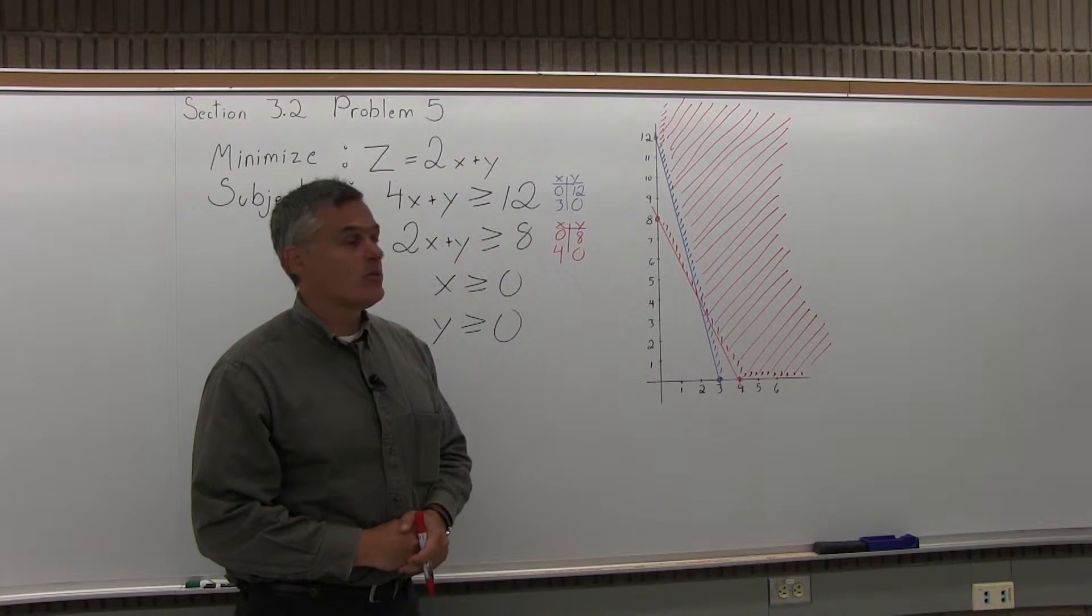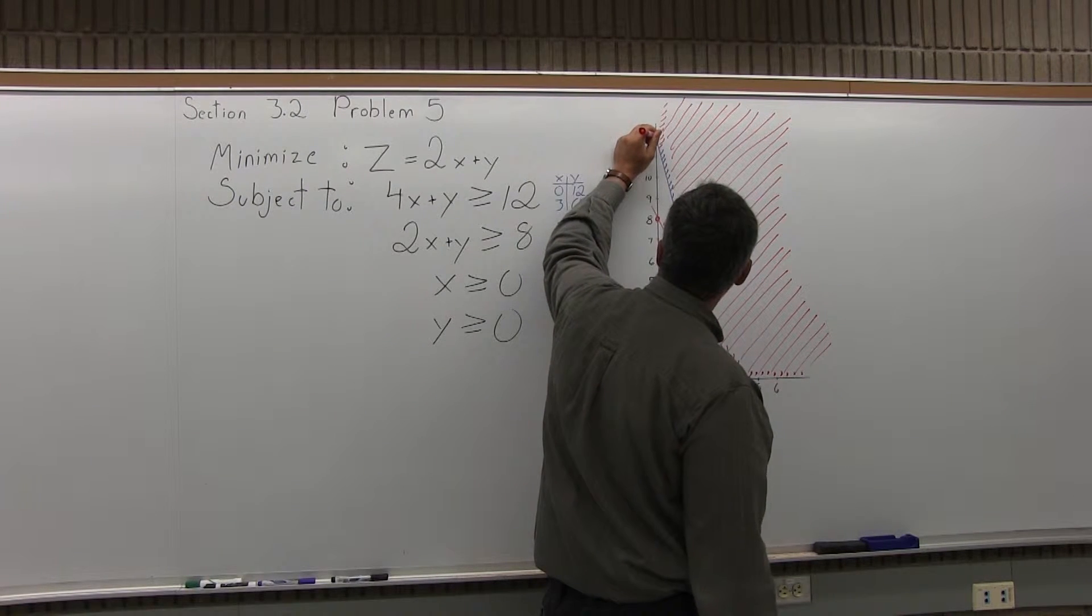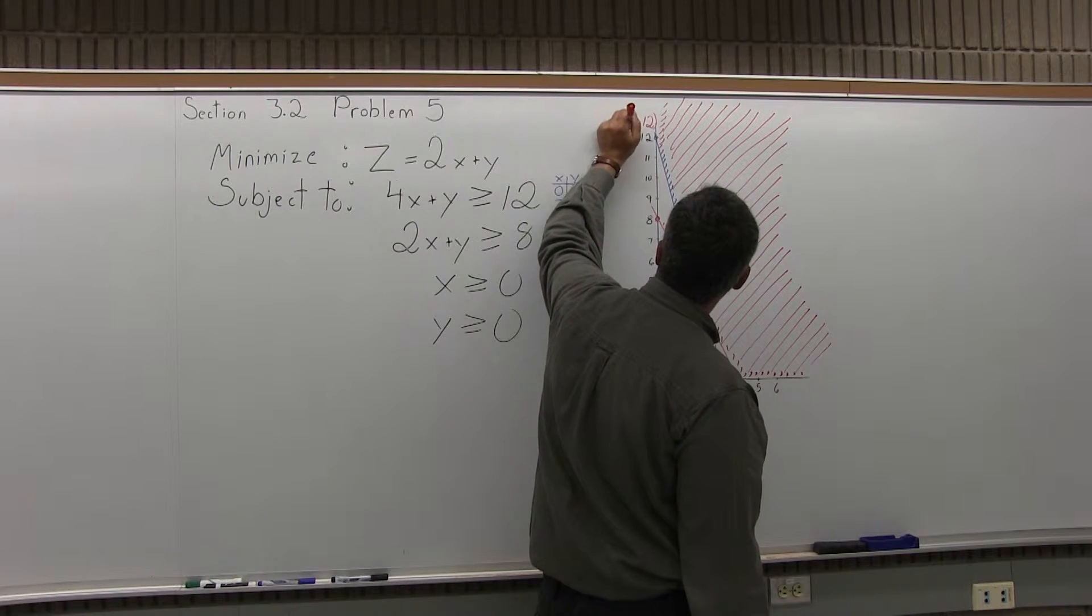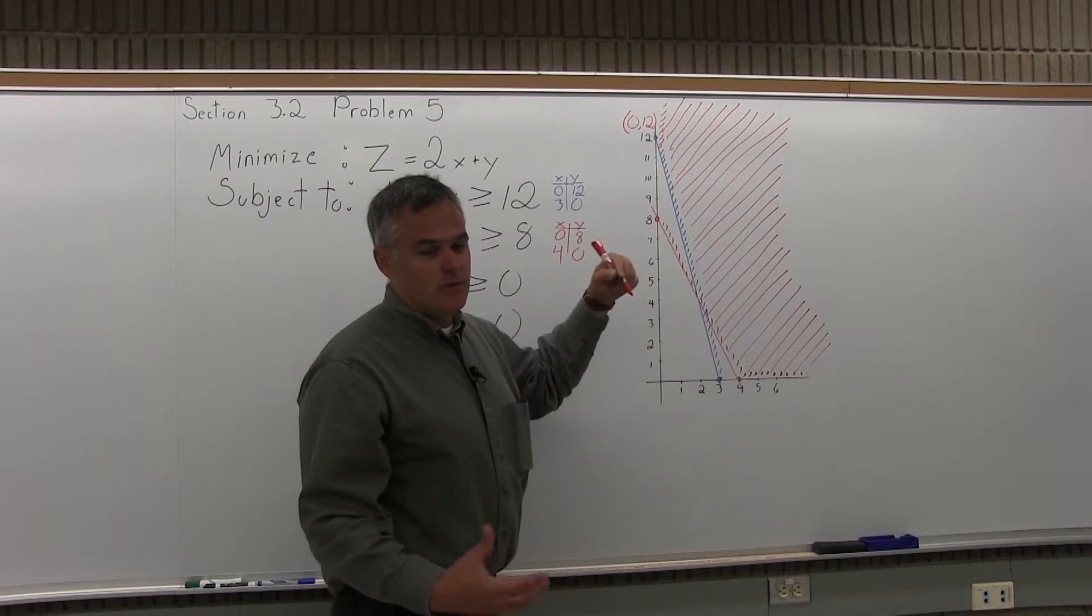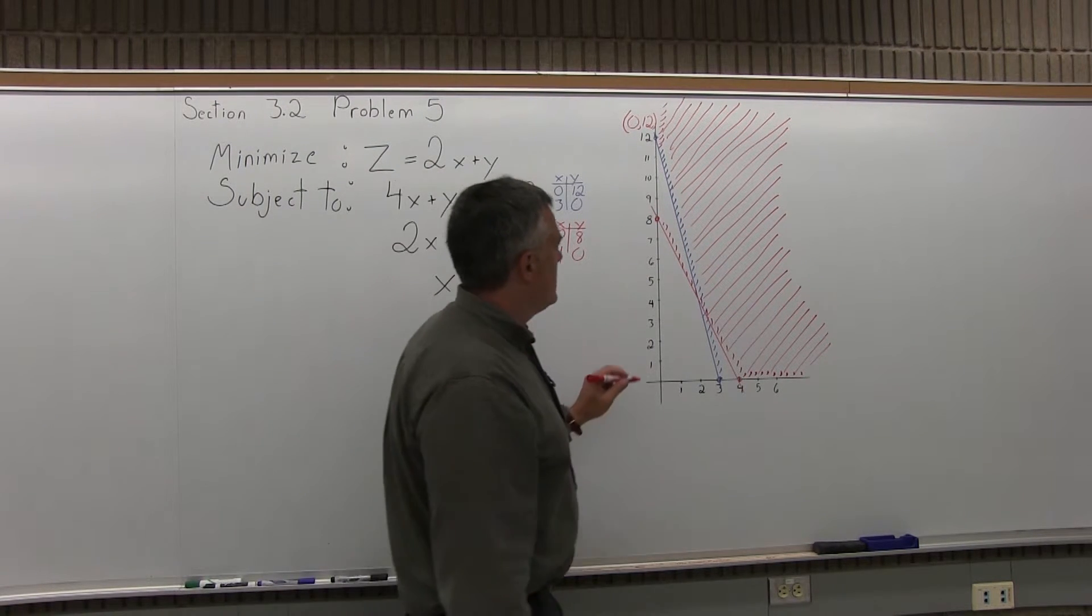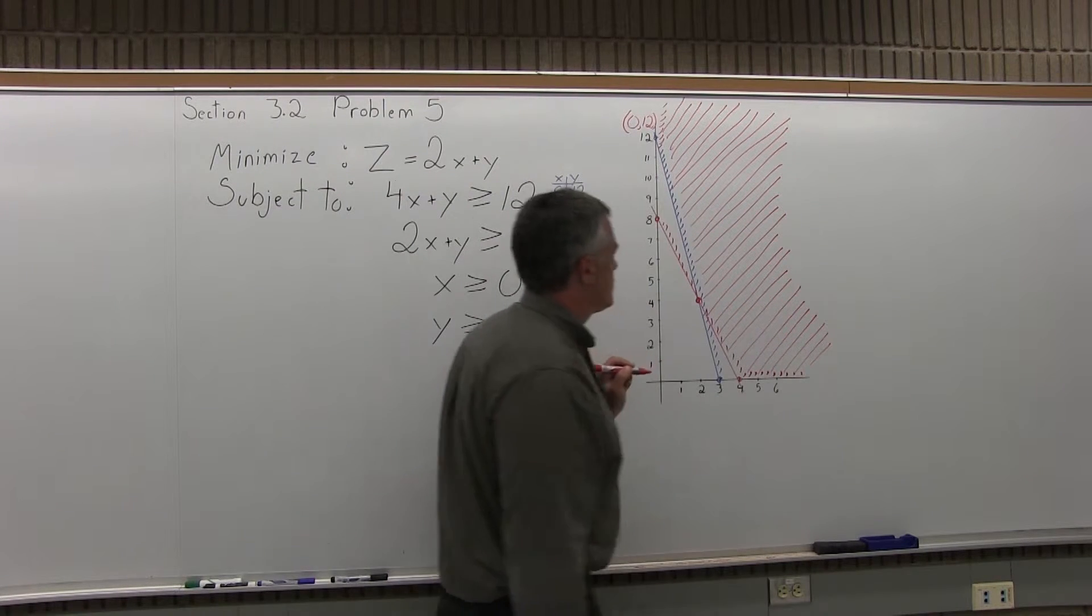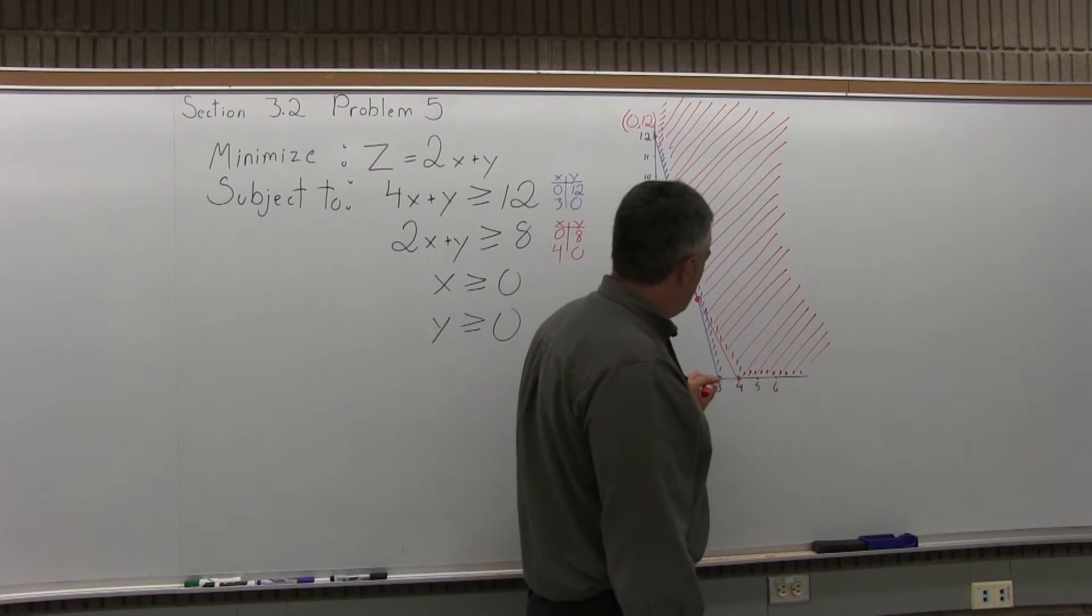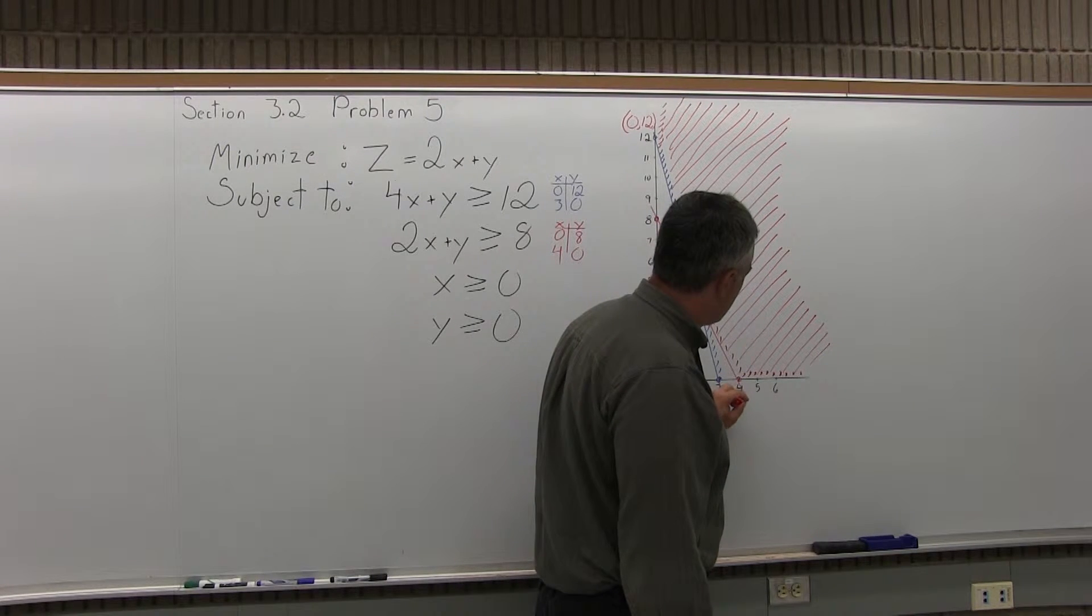So we move on to step two, label the corner points. So one corner point of my feasible region is 0, 12. 0, 8 is not a corner point. We use it to make the graph, but it's not a corner point of my feasible region. It doesn't touch the feasible region. This point where the red and the blue line intersects is a corner point. That's a little tougher to find. I'll come back to that one in a second. 3, 0 is not a corner point. Again, it doesn't touch the feasible region. 4, 0, however, is a corner point.